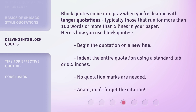Block quotes come into play when you're dealing with longer quotations, typically those that run for more than 100 words or more than five lines in your paper. Here's how you use block quotes: begin the quotation on a new line, indent the entire quotation using a standard tab or 0.5 inches, no quotation marks are needed, and don't forget the citation.